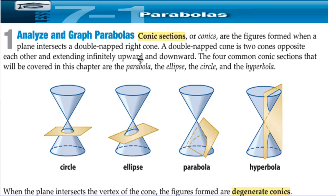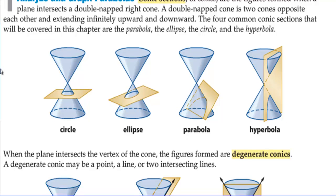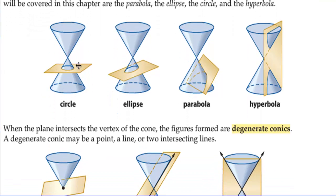The four common conic sections covered in this chapter are parabola, ellipse, circle, and hyperbola. You can cut a cone in four different ways. If you cut horizontally through both sides, you get a circle. If you go at an angle through both sides, you get an ellipse. If you cut through the side and the bottom of a cone, you get a parabola. And if you cut vertically through the two cones, you get a hyperbola.